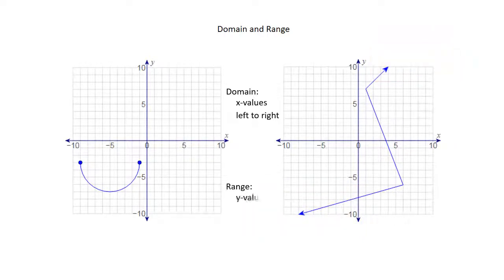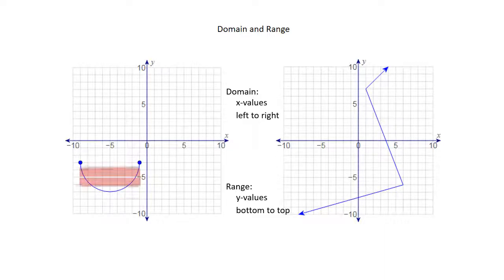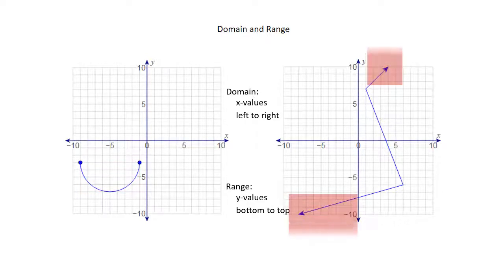For the range, we're going to develop a habit of thinking about y values, and y values are bottom to top. So when you look at the graph, you're looking for the behavior on the bottom and the top. Does it have a clear stopping point, bottom and top? Or will the graph continue indefinitely to the bottom and to the top?